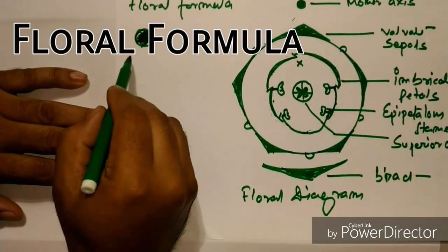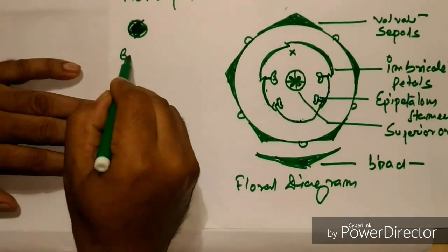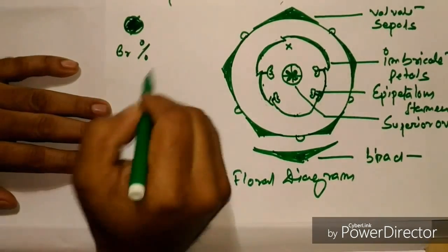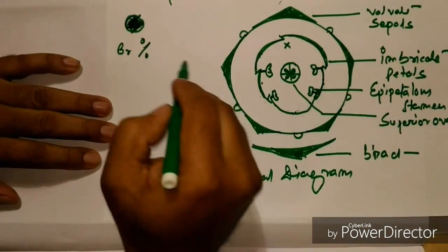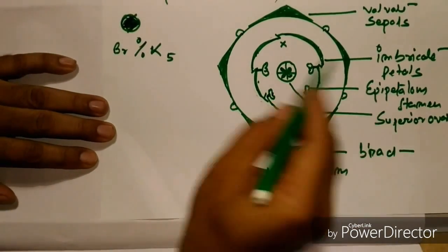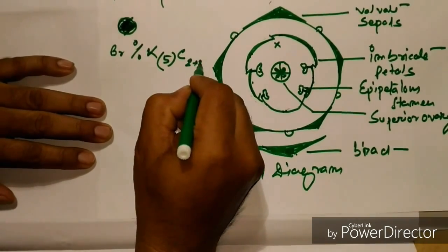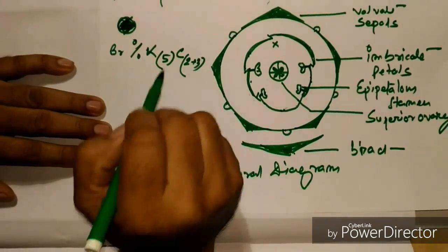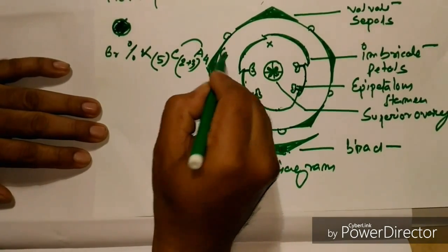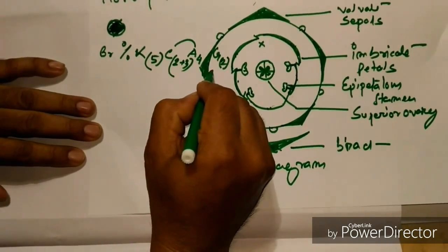So to write down the floral formula, first since bracteate, there will be BR. Since it is a zygomorphic flower, this one. Number of sepals five, so K5. Since it is gamosepalous, bracket. Corolla two plus three united, corolla two plus three united. Androecium four epipetalous and gynoecium two syncarpous and ovary is superior.